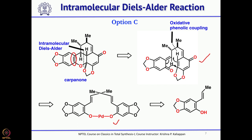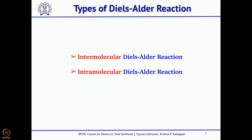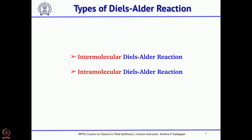Before going into the details of Chapman's total synthesis of carpanone, let us briefly discuss the two key reactions being used. The first is the intramolecular Diels-Alder reaction. Normally, there are two types: intermolecular Diels-Alder, which is the most common, and intramolecular Diels-Alder, which can give more rings. Intramolecular Diels-Alder reactions are abbreviated as IMDA, and IMDA is of two types: type 1 and type 2.